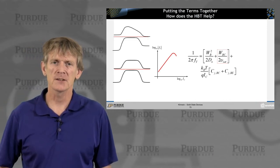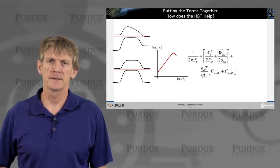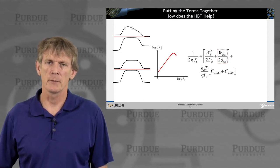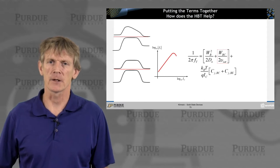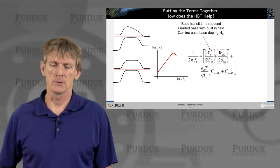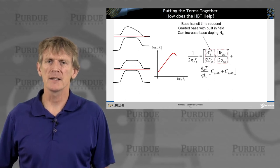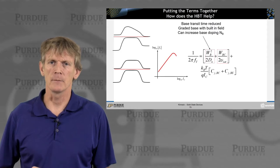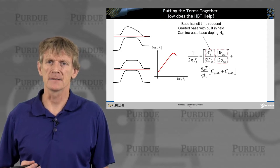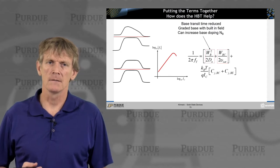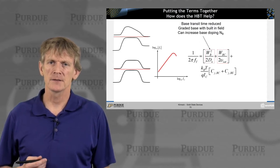So here's the expression we had written down for FT. We want to get to high frequencies, and we want to maintain a gain at very high frequencies. And what does the HPT allow us to do? So we reduced the base transit time by building in a ramp, for example, a graded base.